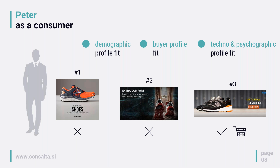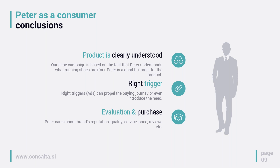The whole process is quite simple: there are different triggers we expose to Peter, and statistically one of them with a certain probability is going to work. The product is clearly understood — our running shoes campaign was based on the fact that Peter understands what running shoes are for. We had three triggers: the visual one, then beliefs, then price. Peter is a very pragmatic buyer, so pricing worked well. What's important is how Peter evaluates and purchases — he cares about brand reputation, quality, service, price, and reviews. As marketers, we were successful and the process was straightforward.